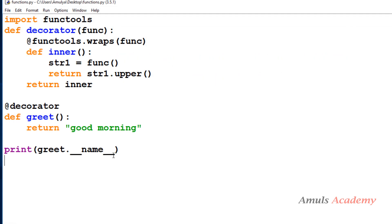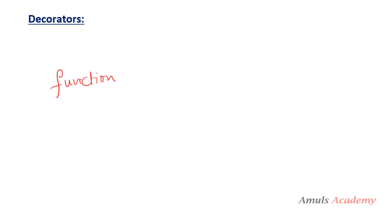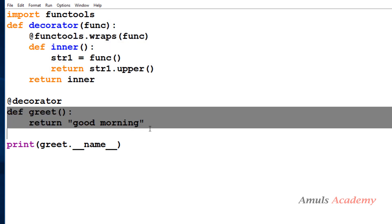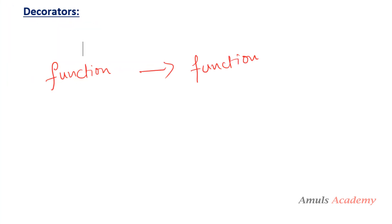So that's the first concept. Till now what we did is define a decorator function and apply it on another function. In this example, this is the function and this is the decorator function — we applied the decorator function on another function. Next, we can apply decorator functions on class methods as well.